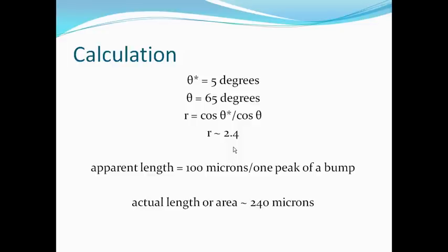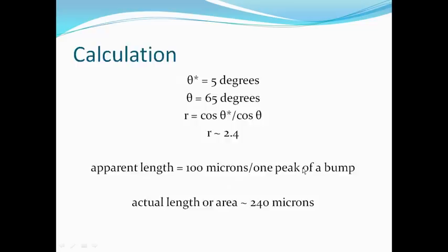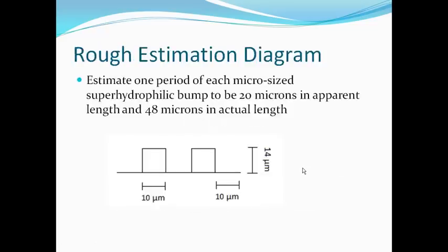The actual length is 2.4 times greater than the apparent length. If the apparent length is 100 microns, then the actual length is 240 microns. Therefore, in this case, we can have a rough estimation diagram.